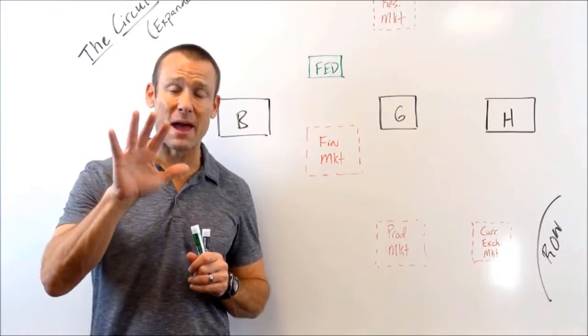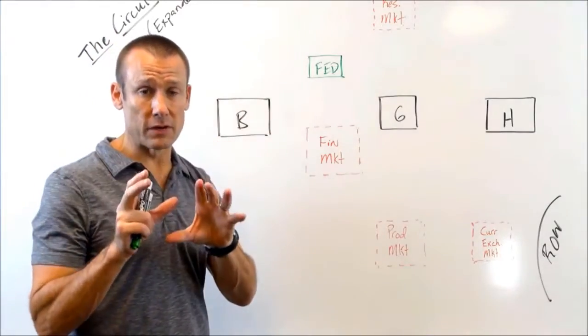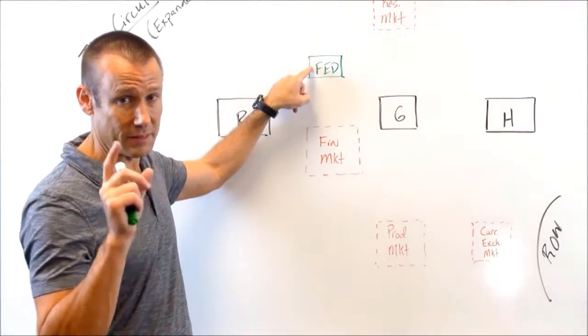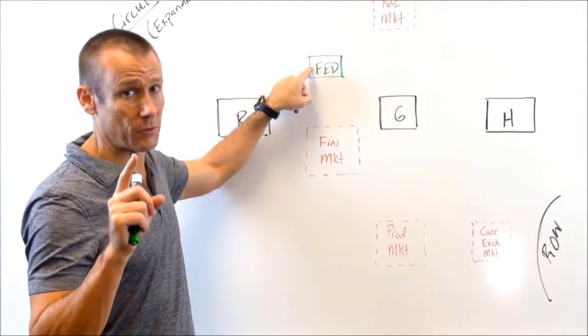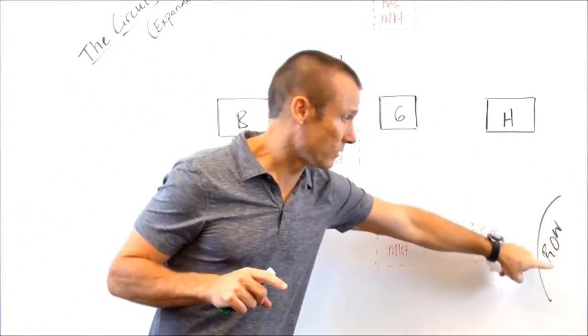It's got our five macro aggregate actors, which are businesses, the central bank of a country. I'm doing the United States here, so I'm putting the Fed right there, but that's the central bank of a country. They're the ones that control monetary policy, the government, households, and the rest of the world.